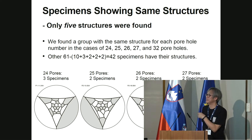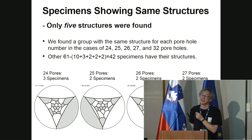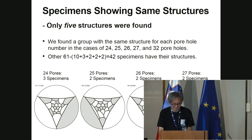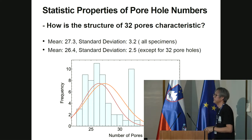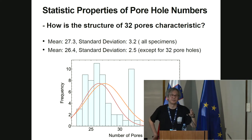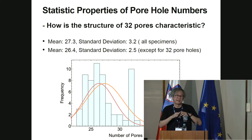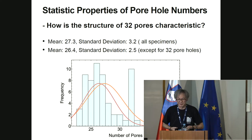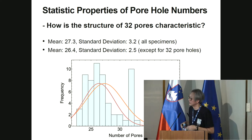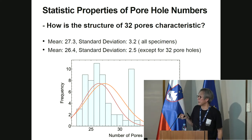The most important finding is that 42 out of 61 specimens have their own unique structures. Because we have 61 specimens, we can also carry out a statistical treatment. This is the result of the frequency distribution of the number of pores.